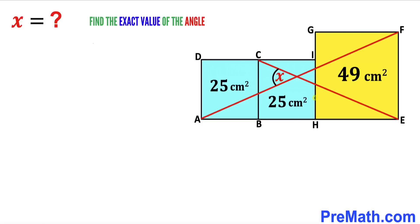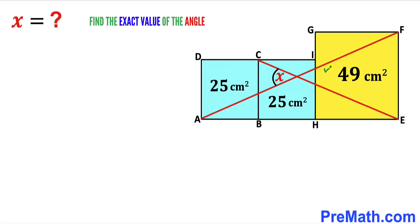Welcome to PreMath. In this video we have got two blue identical squares along with a yellow square. The area of the blue squares is 25 cm² whereas the area of the yellow square is 49 cm². We also have two diagonal lines AF and CE that create an angle X, and our task is to calculate the exact value of angle X — no approximations.